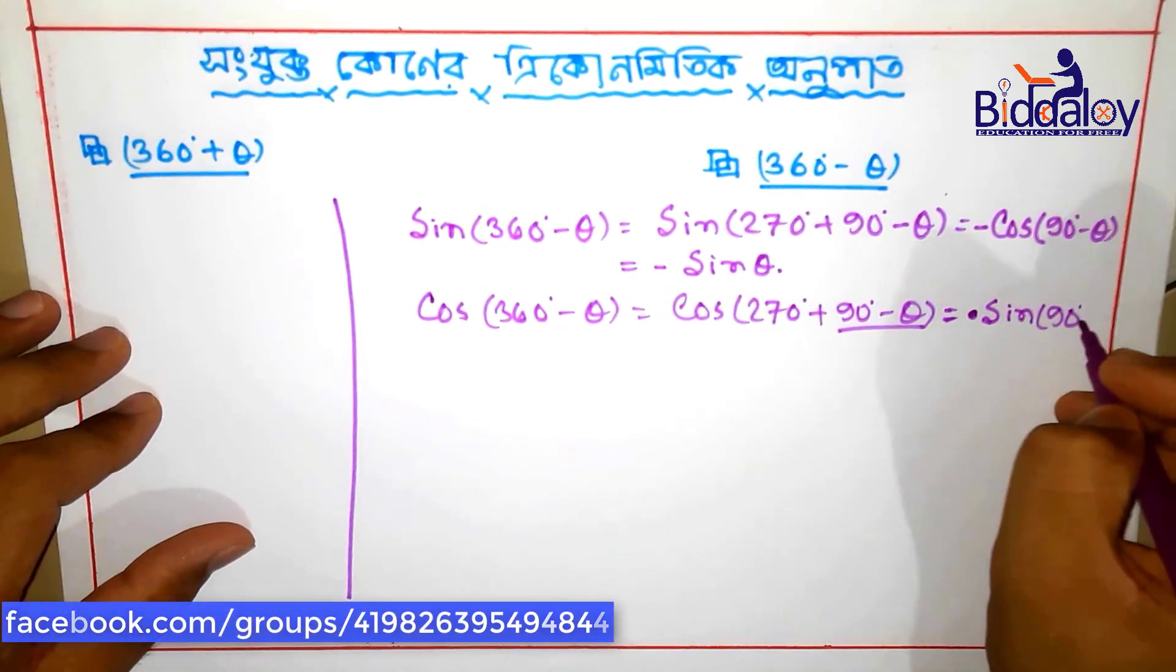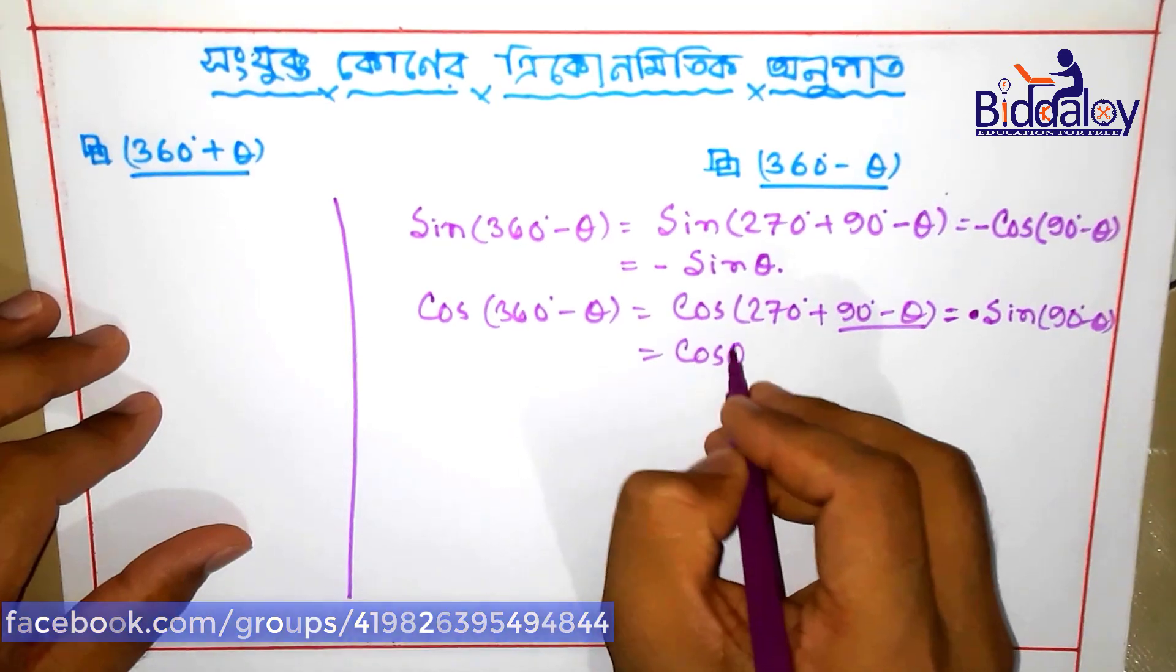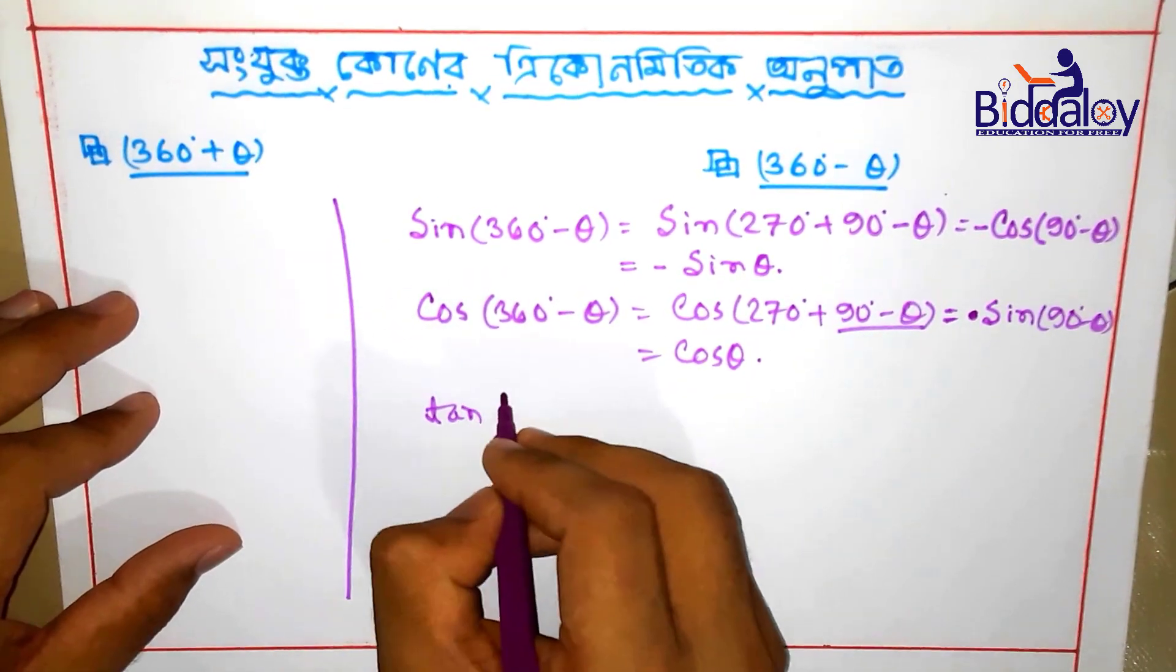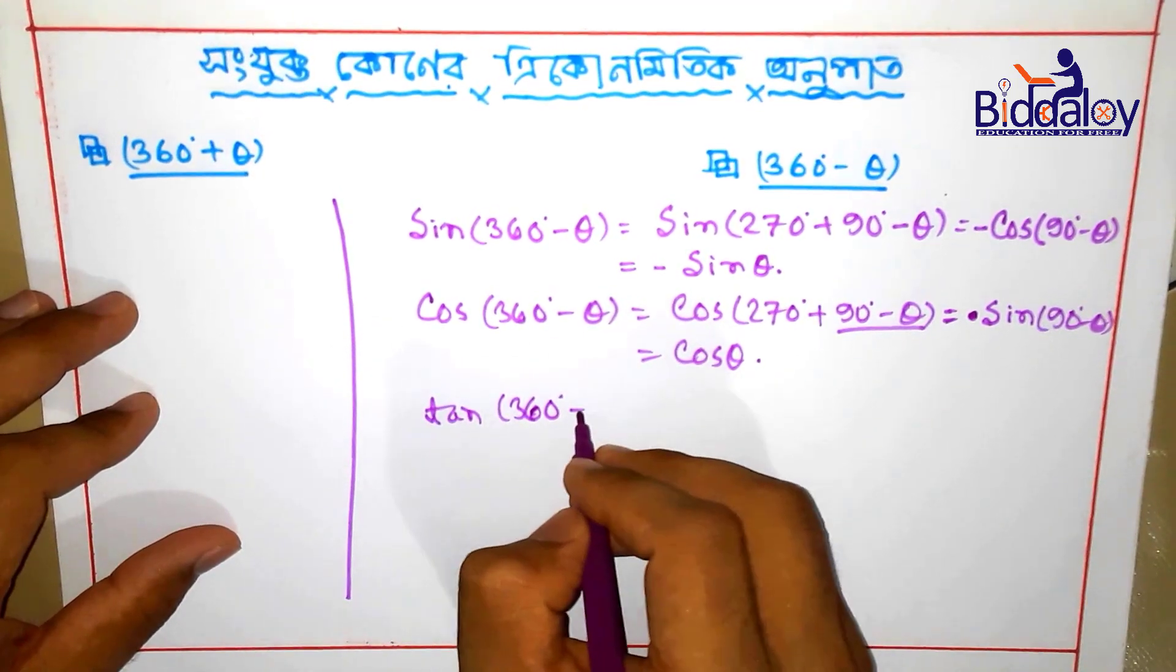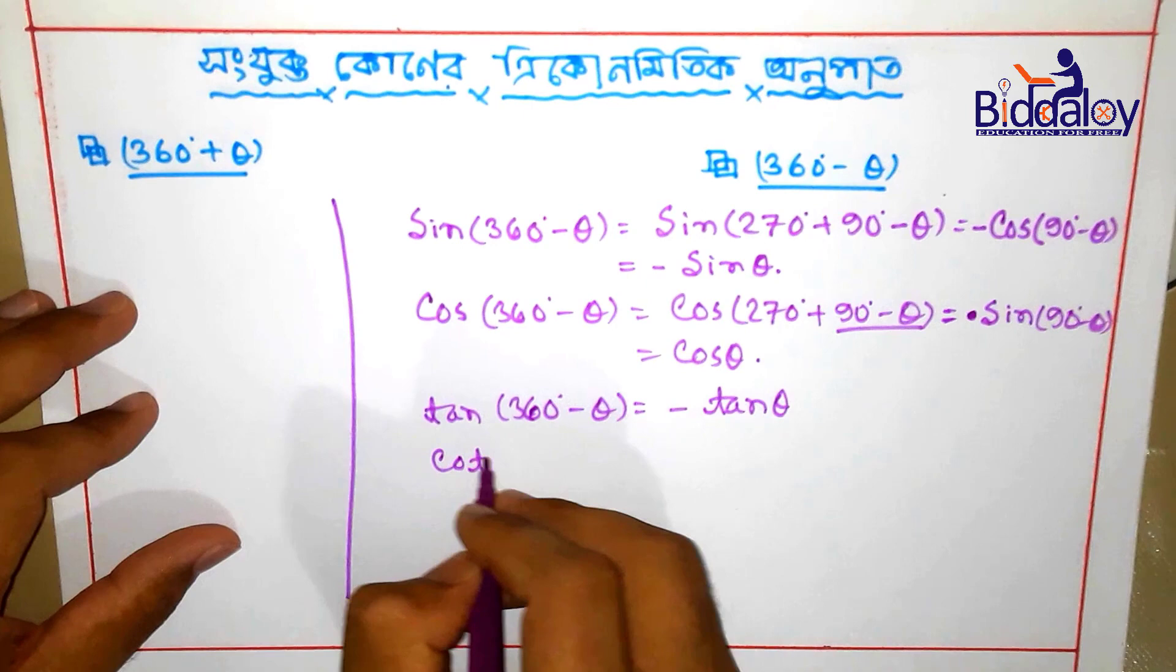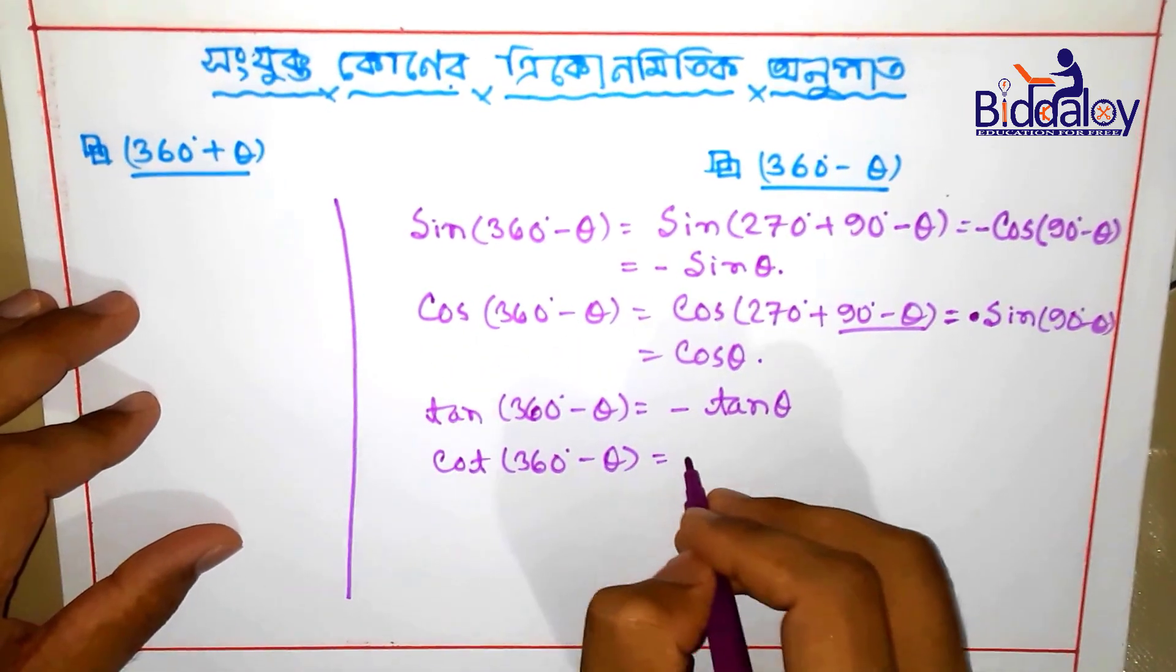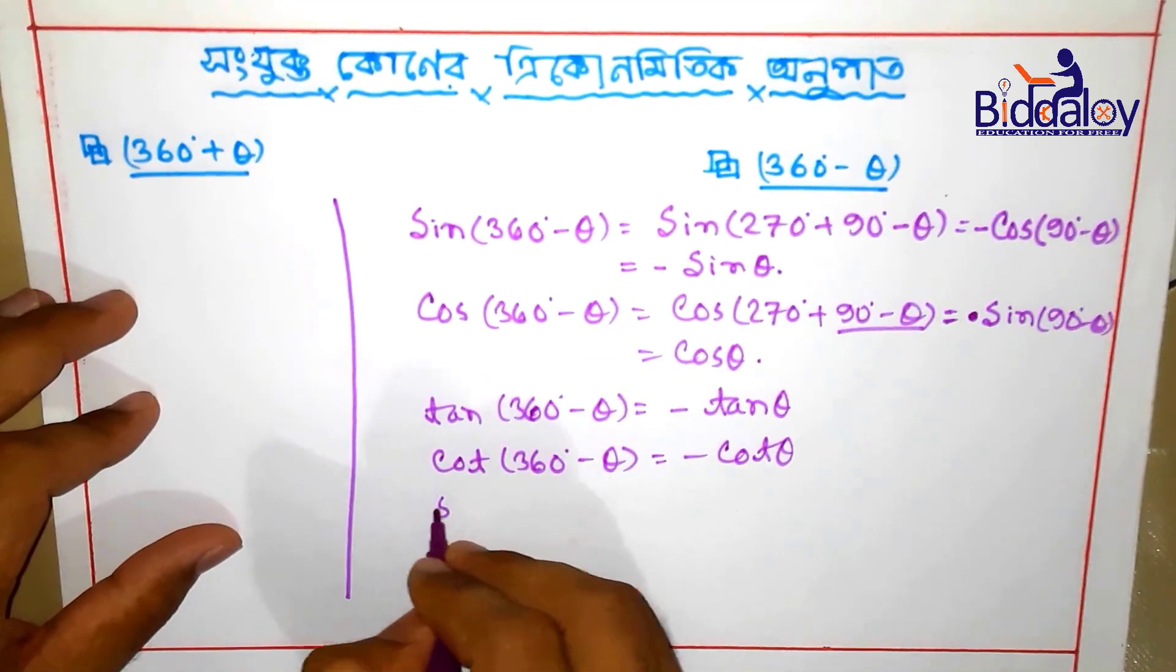That's 90 minus theta. Sine of 90 minus theta, that's cosine theta. So sine degree minus theta, as we know, we can write it as minus sine theta, as recorded. Sine degree minus theta available minus cosine theta.